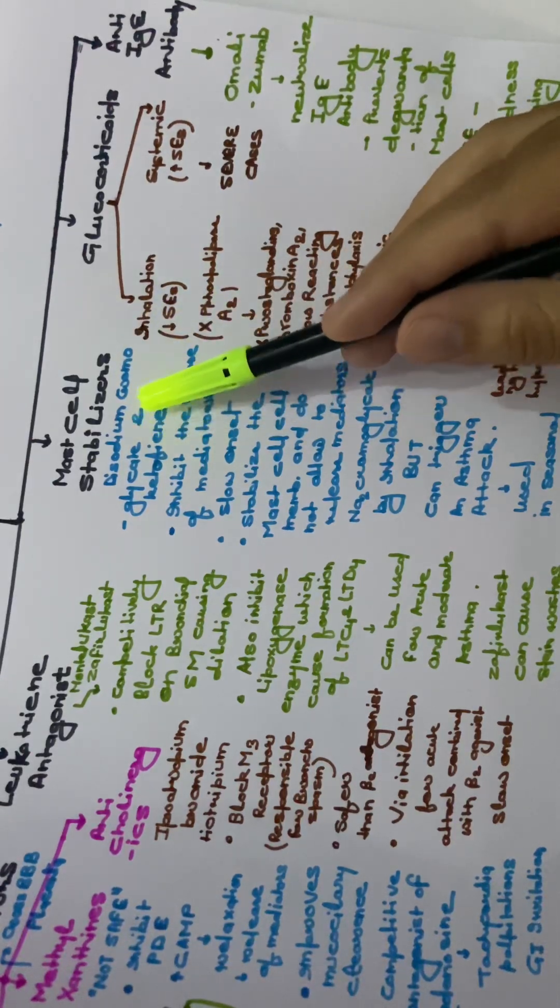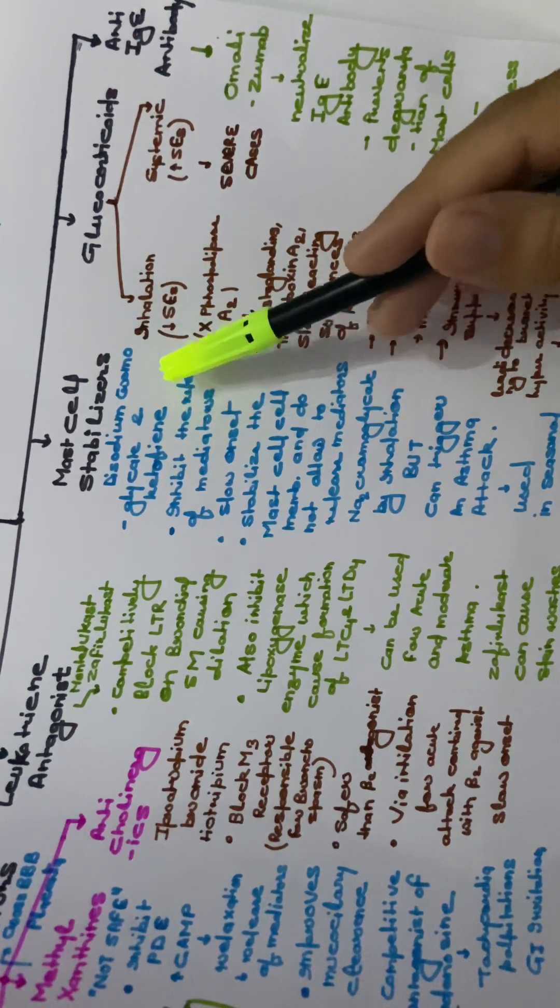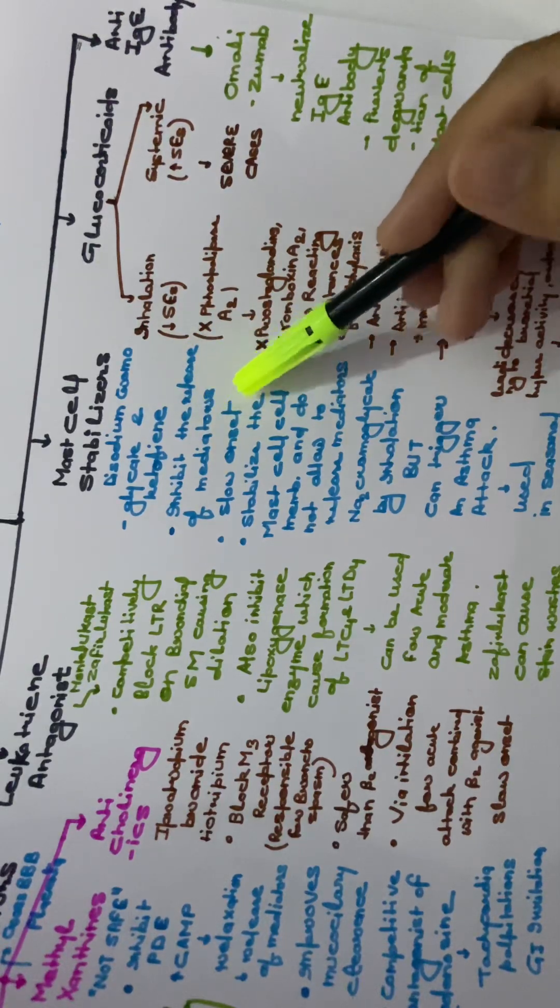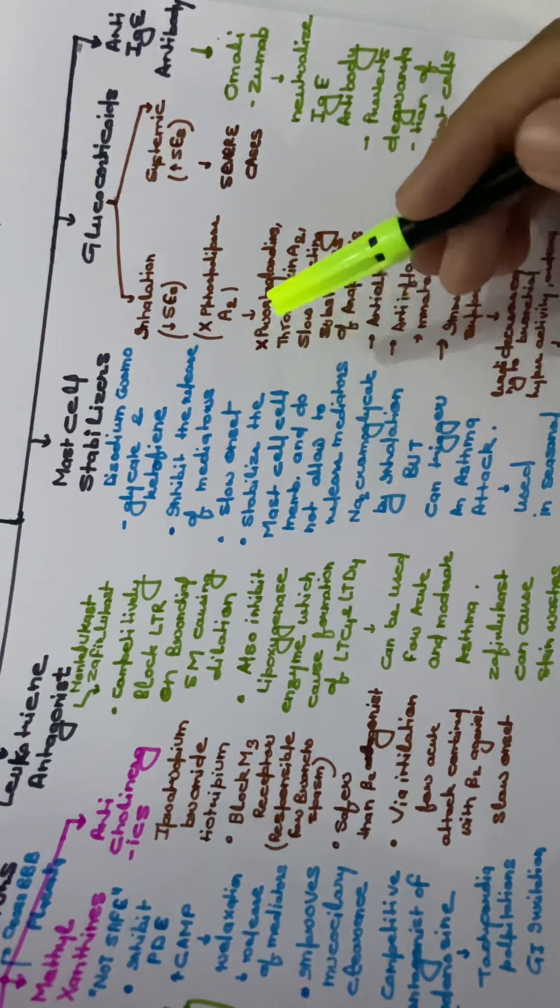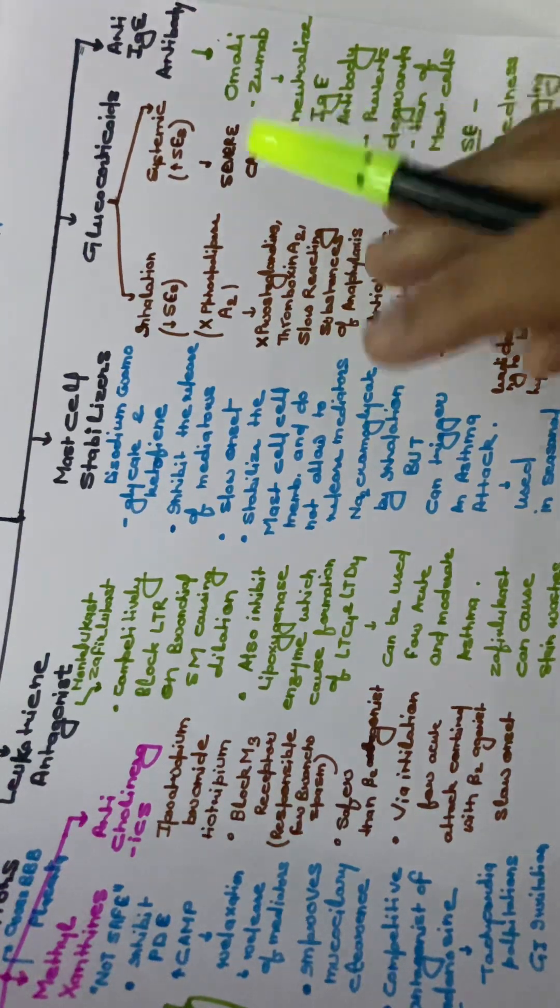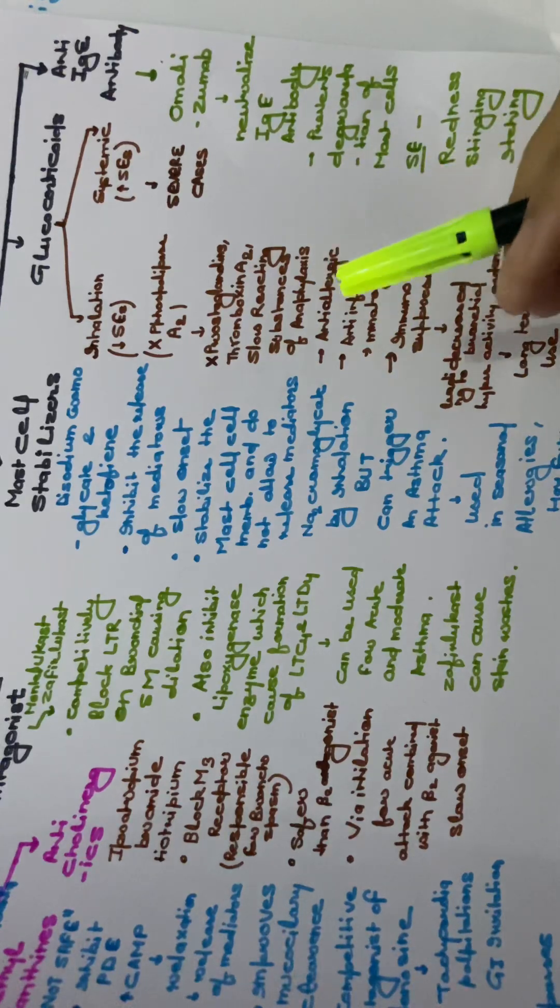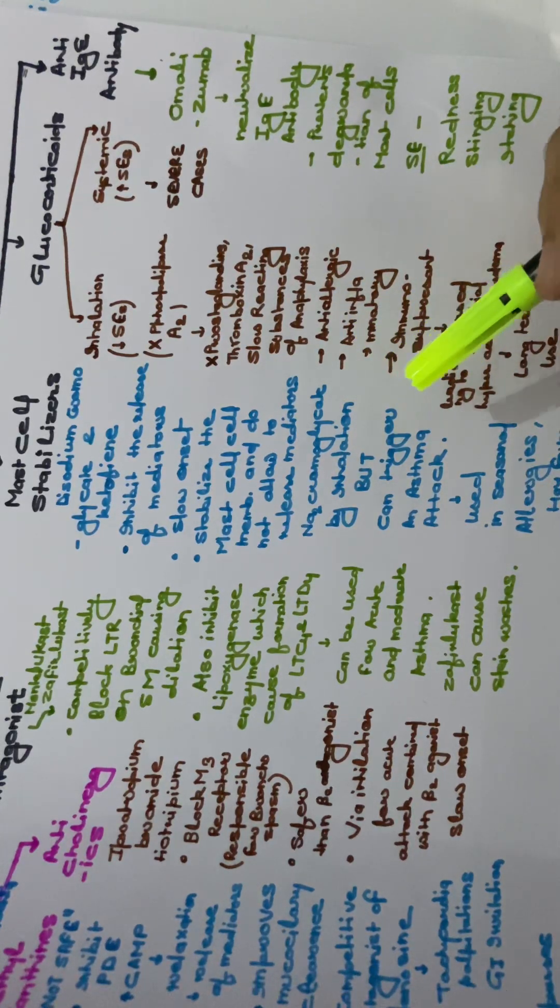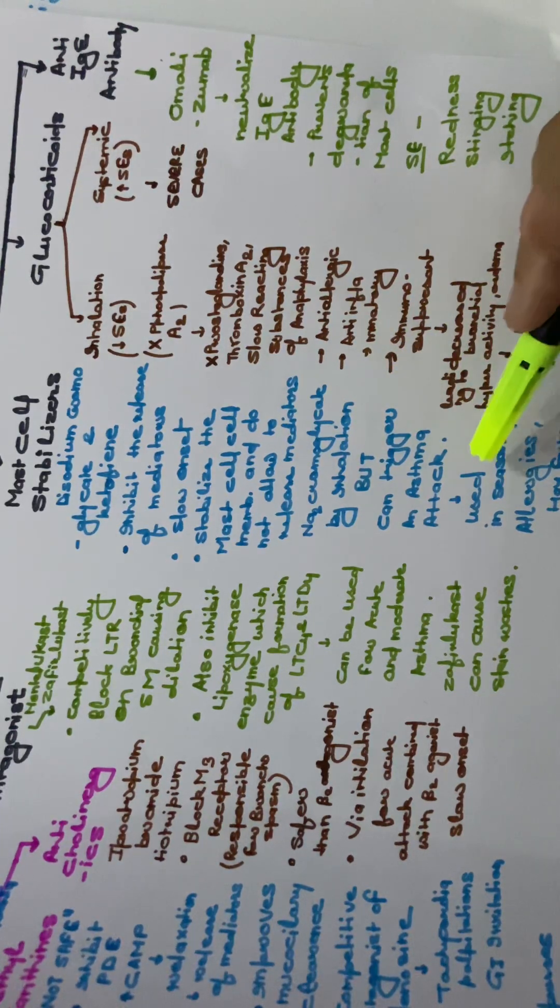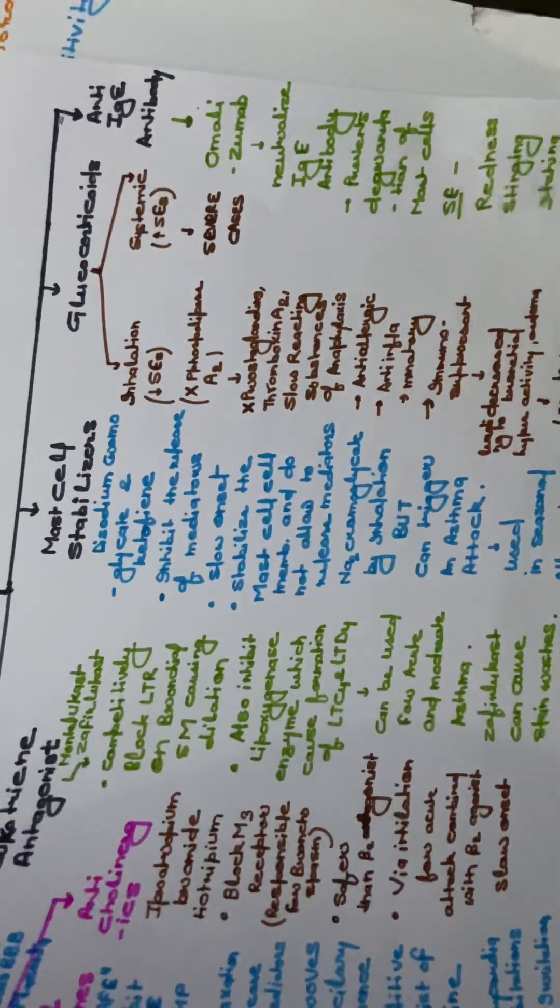Mast cell stabilizers are disodium chromoglycate and ketotifen. They inhibit the release of mediators once. It stabilizes the mast cell membrane and does not allow the release of mediators. Disodium chromoglycate can be taken by inhalation but it triggers the asthma attack, that's why it is not considered in many cases. Used in seasonal allergies, hay fever, etc.